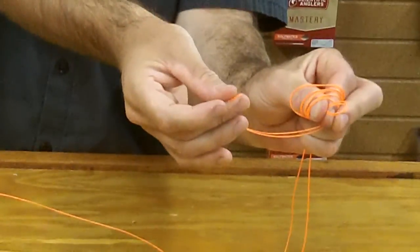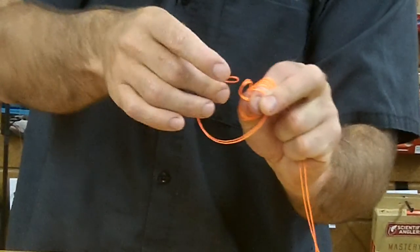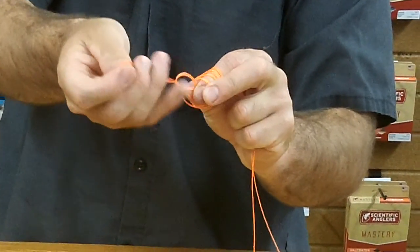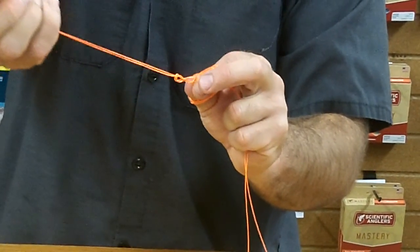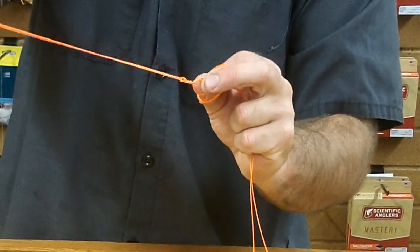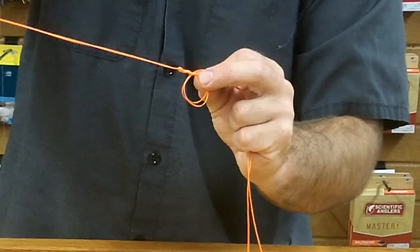After you've wrapped on your fingers five times, you're going to take this loop and come through the loop that you've been pinching and slowly allow the backing to peel off your fingers, creating a woven knot.